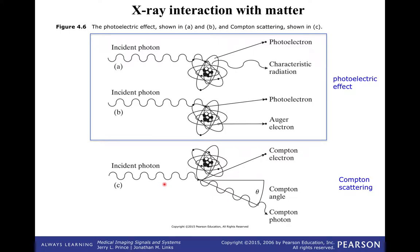What happens to the X-ray when it travels through the patient? There are two dominant interactions of X-rays with matter that we're concerned with in making contrast in X-ray pictures. The first is the photoelectric effect.